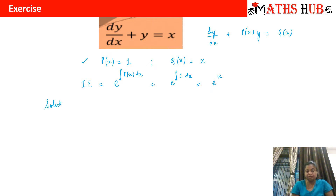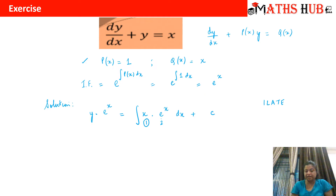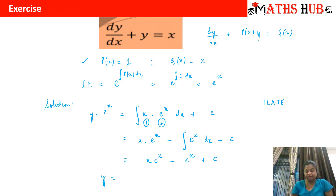The solution becomes y·eˣ = ∫ x·eˣ dx + C. We apply the ILATE rule: x is the first function and eˣ is the second. This gives x·eˣ − ∫1·eˣ dx = x·eˣ − eˣ + C. Dividing through by eˣ, we get y = (x − 1) + C·e⁻ˣ. That is our answer.